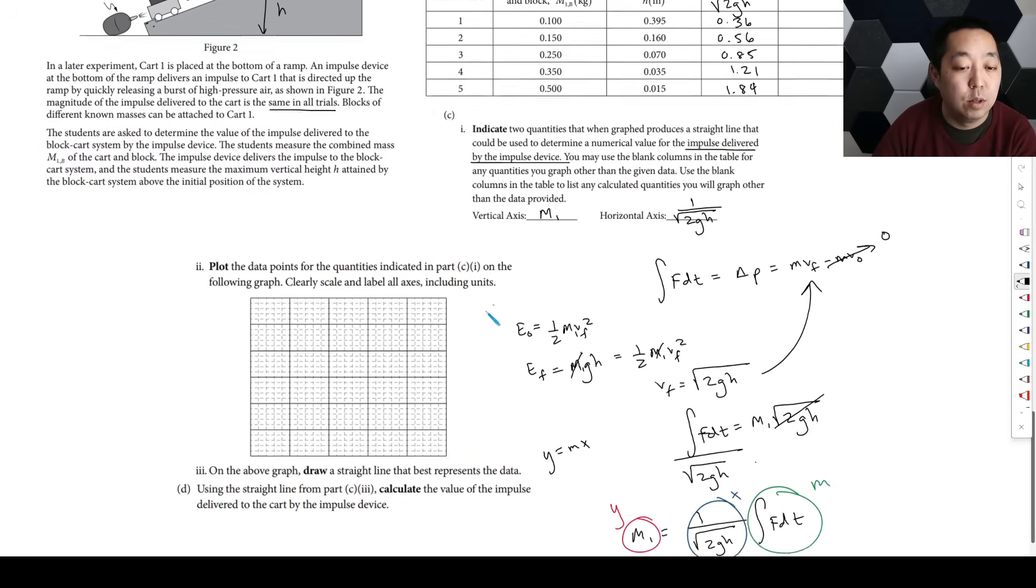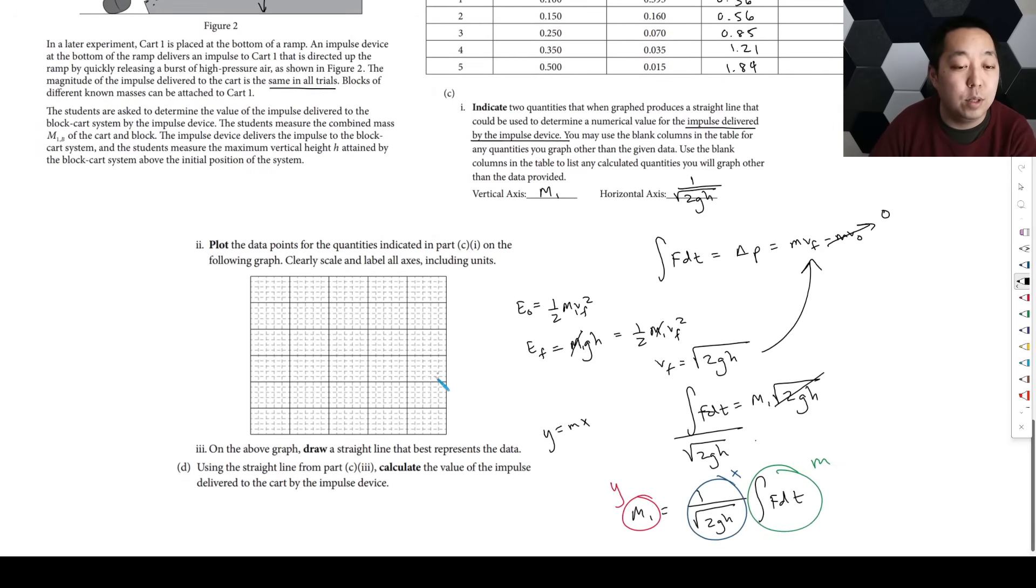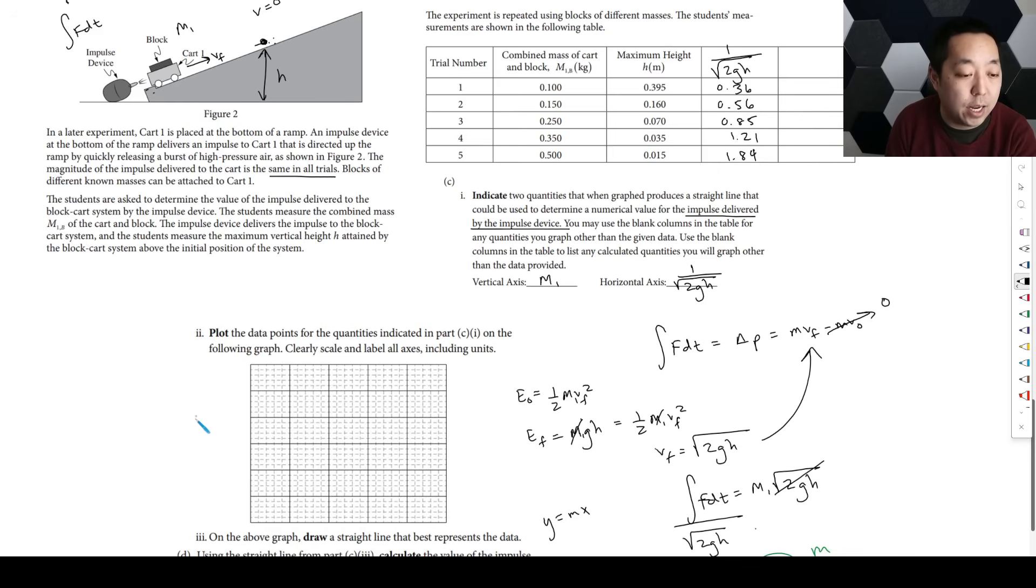When you do the graphs, you do need to label the axes including the units. The Y axis is going to be M1 in kilograms. The X axis is going to be 1 over square root of 2GH, and the units of that are meters per second squared times meters, so this is seconds per meter. You compute that by 1 over square root of meters squared per second squared, which is 1 over meters per second, which is seconds over meters.